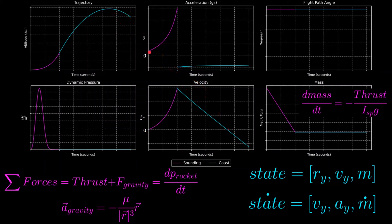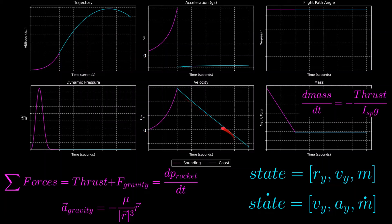For acceleration, it increases until the thrust cutoff point. Once thrust equals zero, the only acceleration is due to gravity, and its magnitude actually decreases as the rocket gains altitude — since gravity weakens with distance. Then as altitude starts to come back down, the magnitude of gravitational acceleration increases again. For velocity, during the coast phase the motion is almost linear because gravitational acceleration is nearly constant over that range, and acceleration is the derivative of velocity.